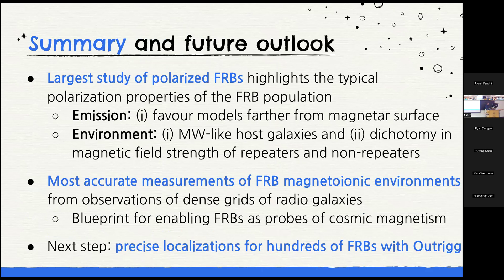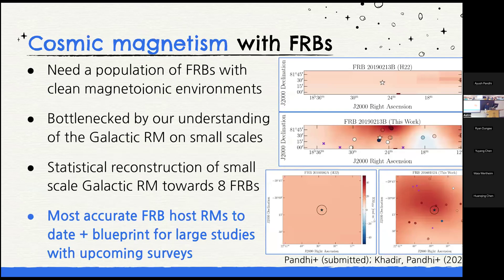Question about the rotation measures: how are you dealing with potential Faraday complexity? Are you taking the largest peak or a weighted average of peaks? We removed any sources that clearly showed resolved peaks, and any that were blended or had one peak we inflated the uncertainty so that it downweights effectively through the reconstruction.